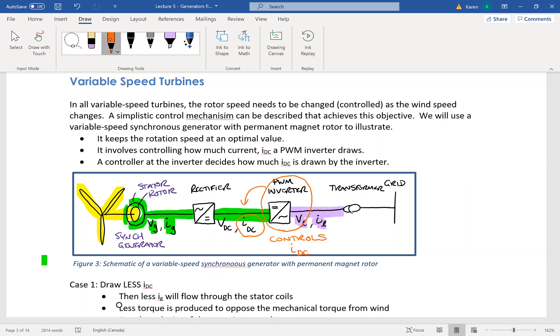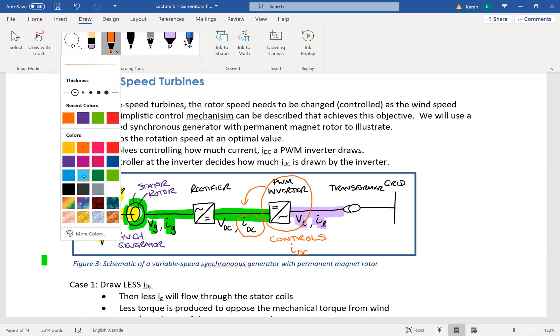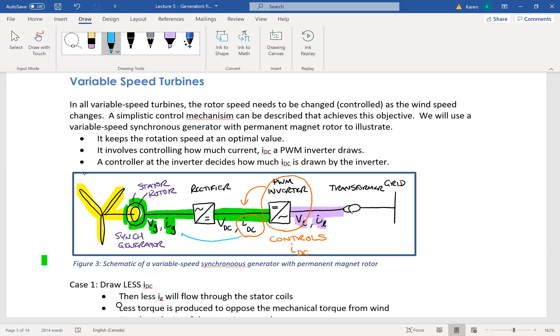From there, of course, if this DC current is increased or decreased, it'll have a direct effect on this current that comes out of the generator. And this is the current that sits in the stator.